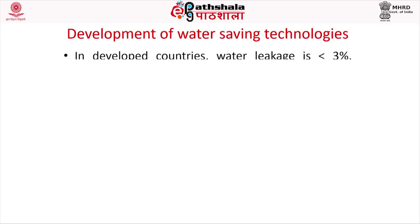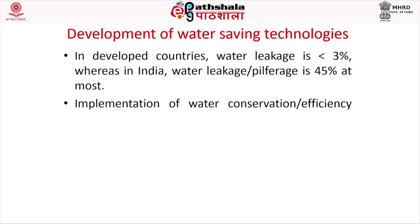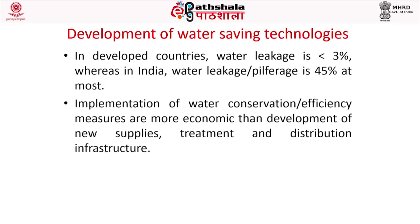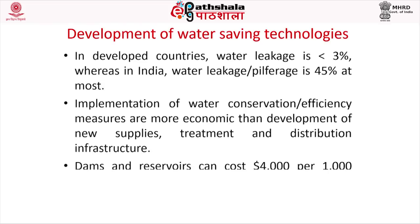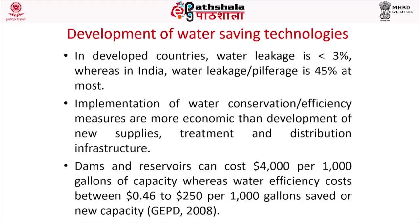In 12 countries water leakage is less than 3%, whereas in India water leakage or pilferage is as high as 45%. Implementation of water conservation or efficiency measures is more economical than development of new supplies, treatment, and distribution infrastructure. Dams and reservoirs can cost $4,000 per thousand gallons of capacity, whereas water efficiency costs between $0.46 to $50 per thousand gallons saved.